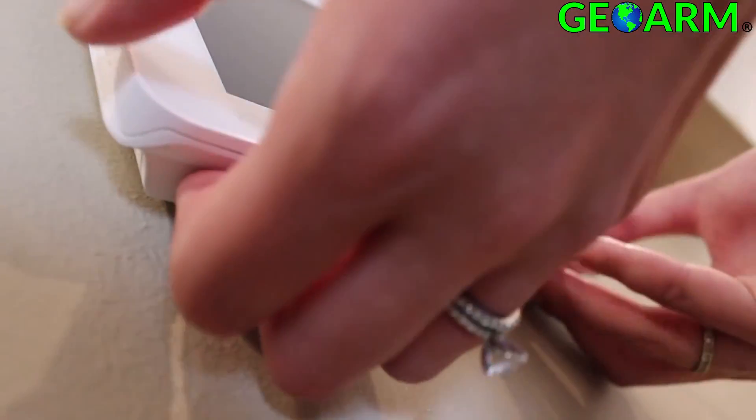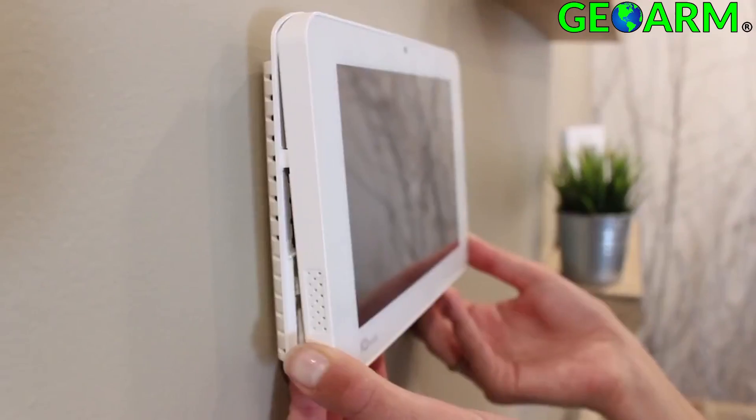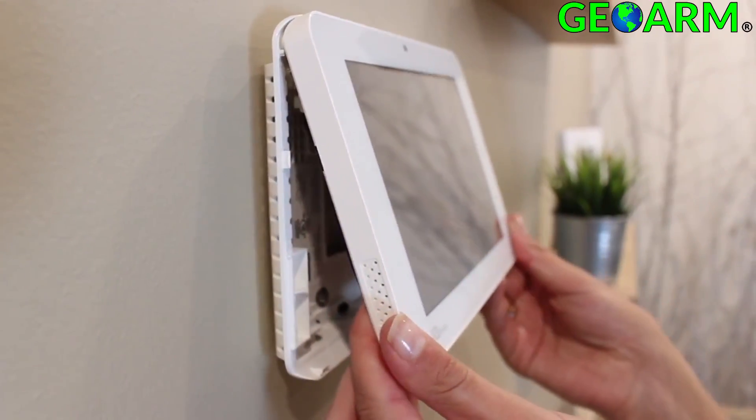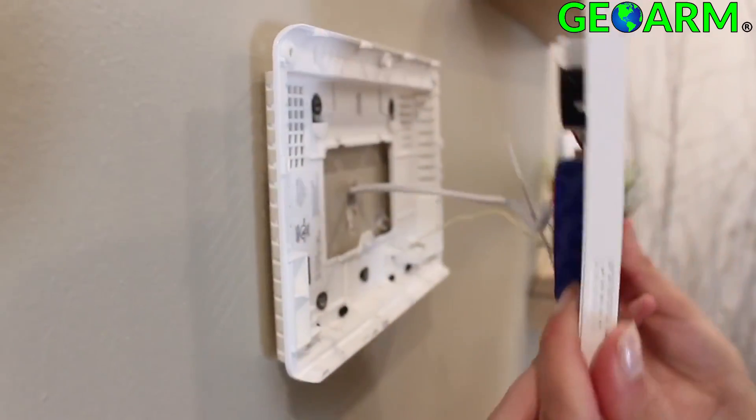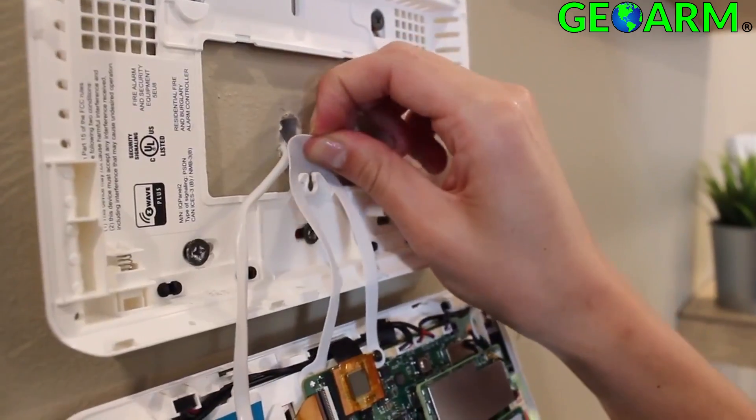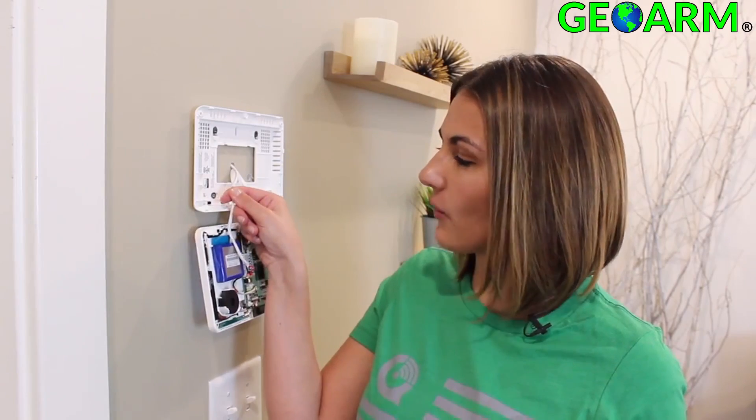Open the panel by pushing up on the two tabs, releasing the face from the back plate. Then hinge it upward to disconnect it from the top. Use the provided hanging strap to secure the panel while installing the card so it does not fall or hang from the power wire.